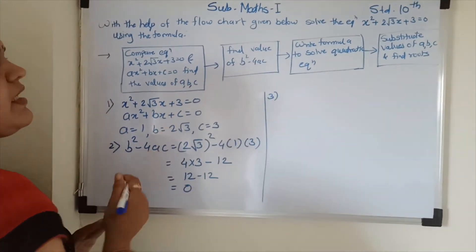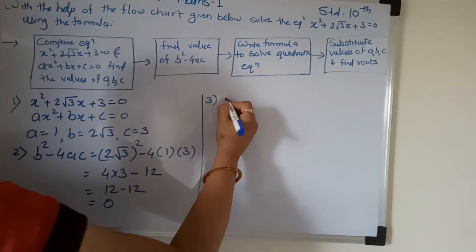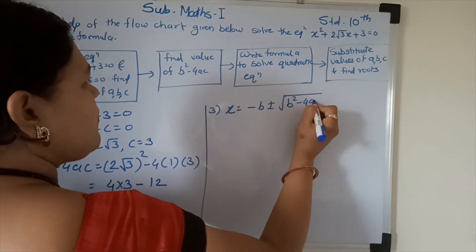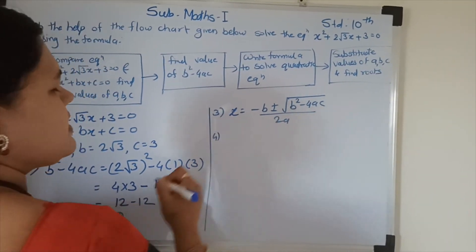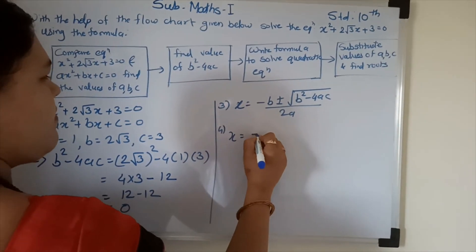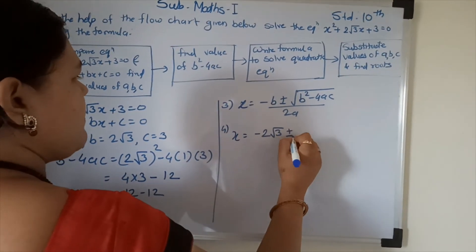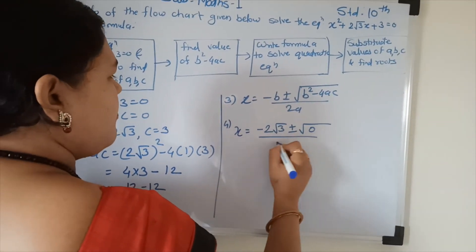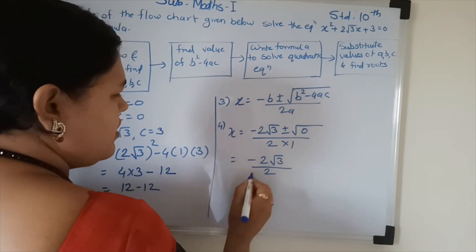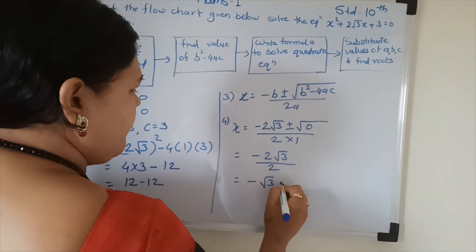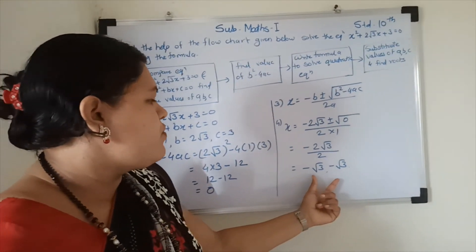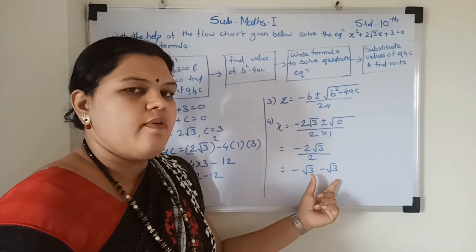Third step: write the formula to solve the quadratic equation. x is equal to minus b plus minus under root of b square minus 4ac upon 2a. Last step: substitute values of a, b, c and find the roots. x is equal to minus 2 under root of 3 plus minus under root of 0 upon 2 into 1. Under root of 0 is 0, so minus 2 under root of 3 plus minus 0 upon 2. This gives minus 2 under root of 3 upon 2, which equals minus under root of 3. Therefore, this equation has roots x equal to minus under root of 3 and x equal to minus under root of 3. Thank you.